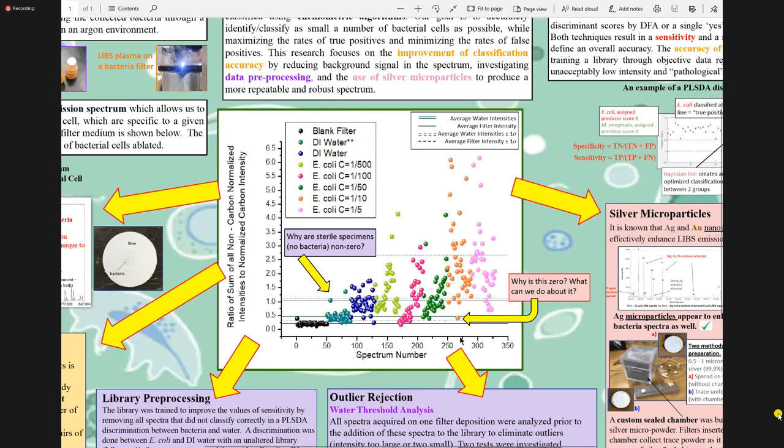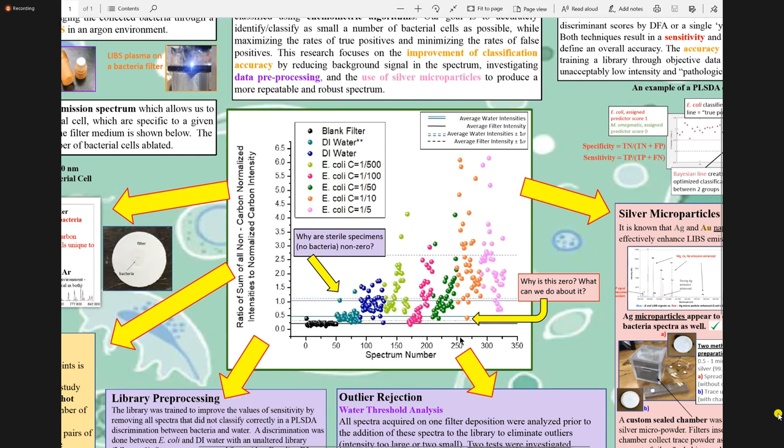Moving over to the central graph, this graph is demonstrating a portion of our library for E. coli at various concentrations, including various controls and the controls are seen in the black dots, the teal dots, and the dark blue dots which represent blank filter and DI water, respectively.